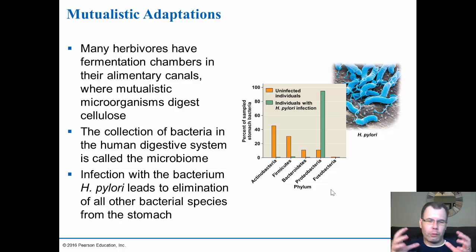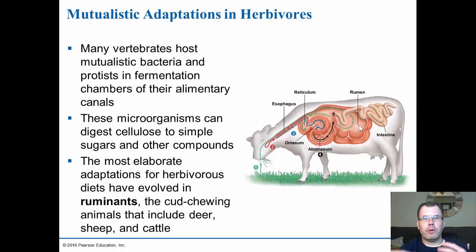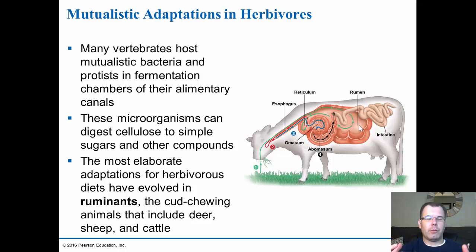Re-establishing the microbiome has done wonders for those suffering from Clostridium difficile and other digestive diseases. Other mutualistic adaptations in herbivores include rumens, which store bacteria that help digest cellulose into simple sugars. Cud-chewing animals like deer, sheep, and cattle have large rumens — essentially large bags filled with bacteria. Termites also have bacteria in their digestive system that allow them to eat and break down wood cellulose, which is why they cause damage to homes.